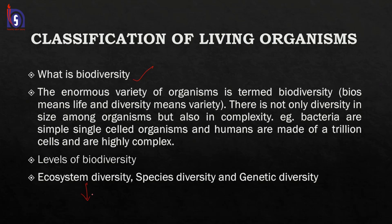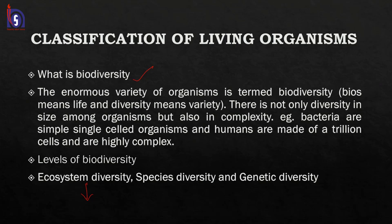Ecosystem diversity: the Earth is one biosphere consisting of several biomes, within which there are several kinds of ecosystems — for example, pond ecosystems, grassland ecosystems, and aquatic ecosystems like rivers and oceans. As per the conditions prevailing in these areas, we see different kinds of organisms and different species. This variety across different ecosystems is what we call ecosystem diversity.